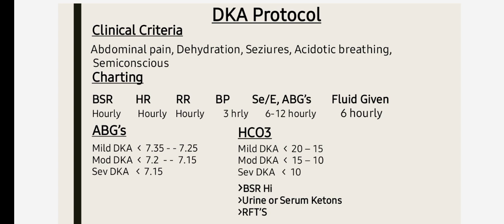Diabetic ketoacidosis is a pediatric emergency in which a diagnosed or undiagnosed child presents with symptoms like vomiting, abdominal pain, fits, semi-conscious status, and acidotic breathing. After taking a detailed history, investigations need to be done, which show higher BSR, serum or urinary ketones positive, and ABGs showing pH less than 7.35 and HCO3 less than 20.